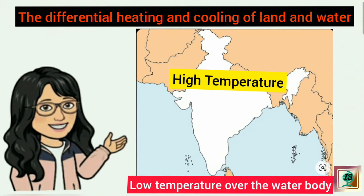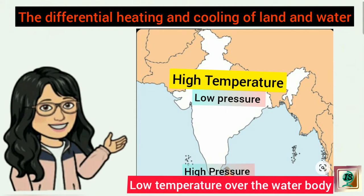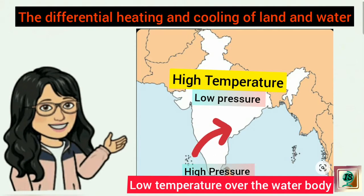High temperature creates low pressure, due to which a low pressure area develops over the land mass. On the other hand, high pressure develops over the water body. As a result, winds blow from the southern Indian Ocean to the Indian subcontinent.